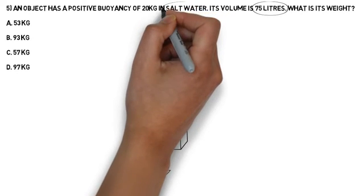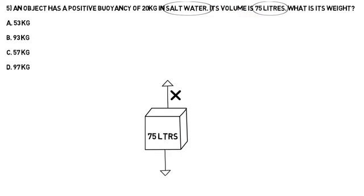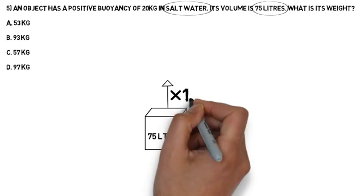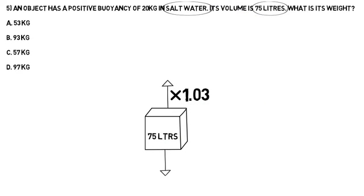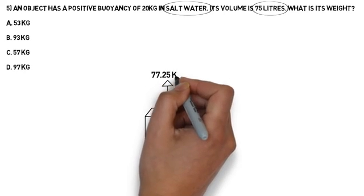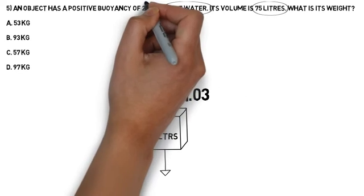Now let's look at the question again and see that we're told the type of water we're in. Salt water. Let's put in 1.03 and we've got our first calculation. Let's do it. 75 times 1.03 is 77.25.